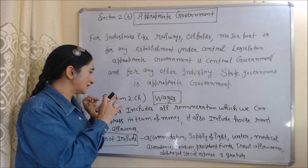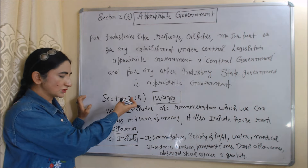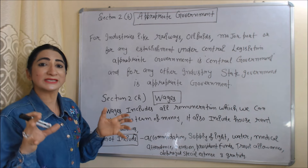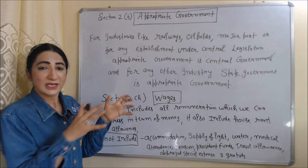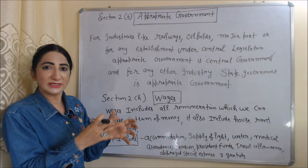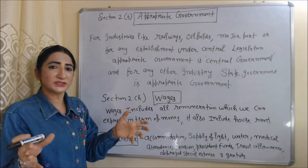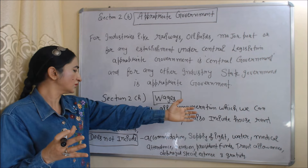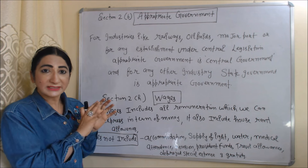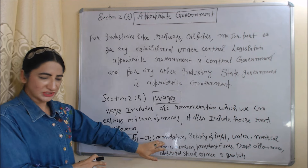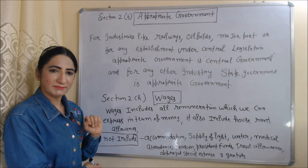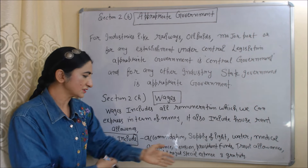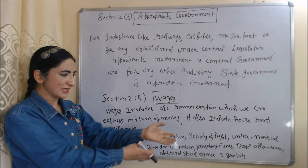The second definition is 'wages' according to Section 2(h). Wages include all remuneration which can be expressed in terms of money. It also includes house rent allowances, but does not include accommodation, supply of light, water, medical attendance, pension, provident fund, travel allowances, different special expenses, and gratuity.